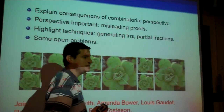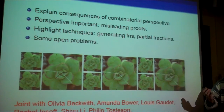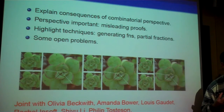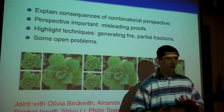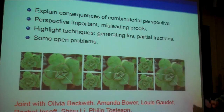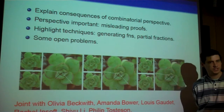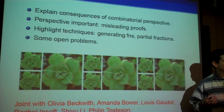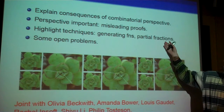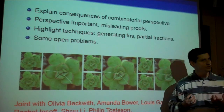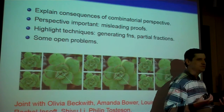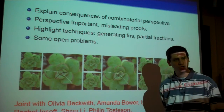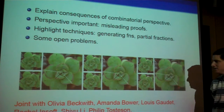So introduction: I want to explain Zeckendorf's theorem and many of its consequences from a combinatorial perspective. We spent a lot of time at the beginning of the semester talking about combinatorics and good ways of counting things. I want to explain how it's not enough to have a proof — sometimes some proofs are better than others depending on what you're trying to understand. We're going to see generating functions, partial fraction decompositions, and I want to talk about some open problems.